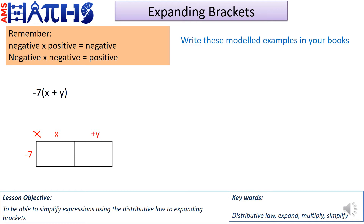Thanks for trying that. Now let's look at what our answer should be. We have to multiply negative 7 by x, and multiply negative 7 by positive y. Both terms x and y are positive. A negative times a positive gives us negative, so negative 7 times positive x is minus 7x, and negative 7 times positive y is minus 7y. Our answer is minus 7x minus 7y.